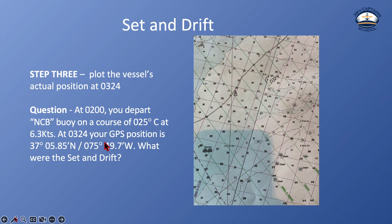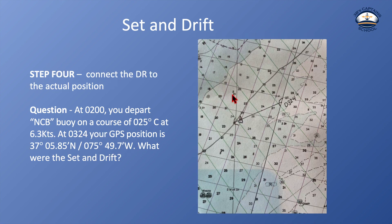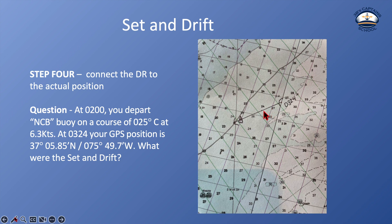But I wasn't there. Because at 0324, I plotted my GPS position, and if you look at this little triangle, that was my GPS position: 37 degrees 05.85 minutes north, 75 degrees 49.7 minutes west. That's where I actually ended up. Here's where I actually am at 0324, and here's where I should be at 0324, which tells me that the current pushed me in this direction my entire trip.